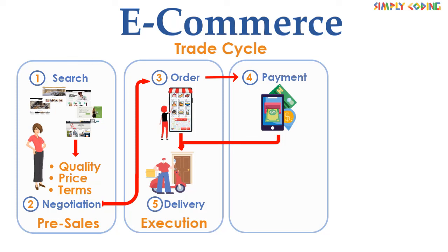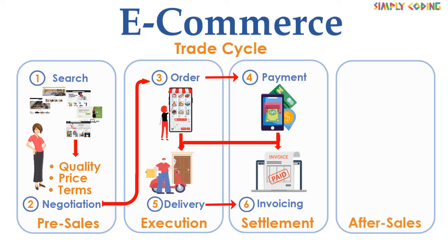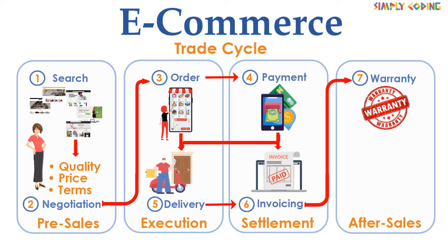In the Delivery Phase, the supplier processes the order and the customer receives the delivery of the product. Then comes Settlement, which consists of Invoicing and Payment if any. Invoicing means the customer will receive a bill for the purchased product along with the delivery. After confirmation of the received product, the customer will pay if they have not paid earlier. The last step is After Sales, consisting of Warranty and After Sales Service. In the warranty period, the customer will get maintenance services for free or at a minimum cost. After Sales Service means that in case of complaints about the product, you can get maintenance service from the supplier at an individual visit cost or yearly fee.